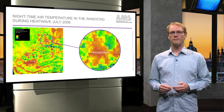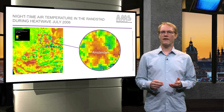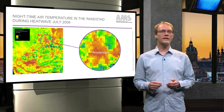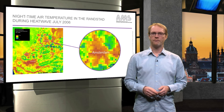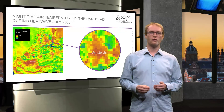In short, the urban heat island is the phenomenon that cities heat up faster during the day than their rural surroundings and also cool down slower during the night. This map shows you the air temperature during a warm summer night over the west of the Netherlands, the so-called Randstad. You can see clearly that the cities are hotter than their surroundings because the air above them does not cool down during the night.